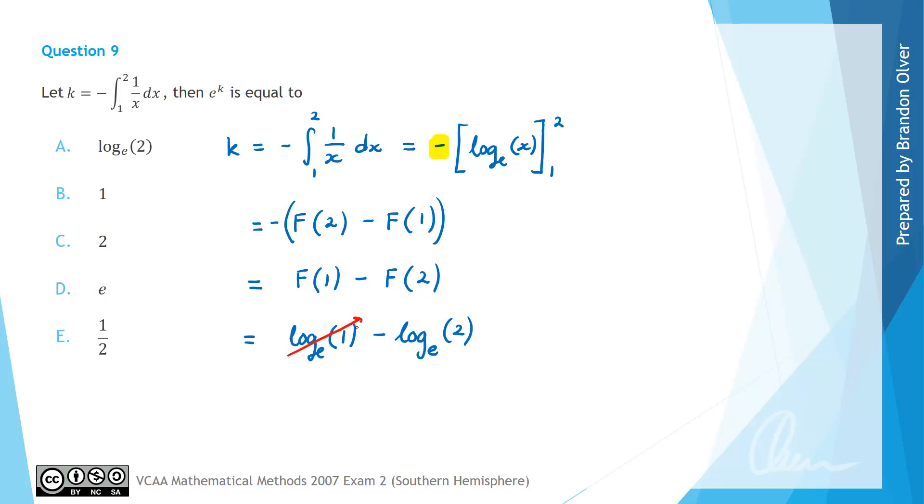And we know that log e of 1 is simply 0. And we also know that we could take a constant that multiplies a log term up into the power. So we can move that negative 1 out the front to up the top. So therefore, we can write k is equal to log e of 2 to the power of negative 1, which is 1 half.